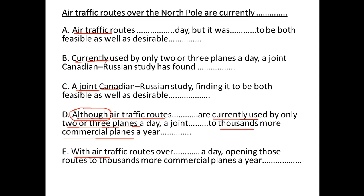Only option A has 'but' between two clauses, and option D has 'although.' No other choice has a contrast indicator, so eliminate B, C, and E. Now looking at option A, it says 'both feasible as well as' — 'both' must be followed by 'and,' so 'both...as well as' is the wrong pair. Eliminate A. Hence, D is the correct answer. Thank you.